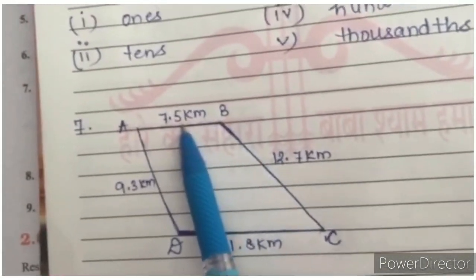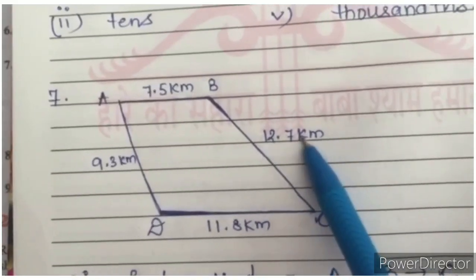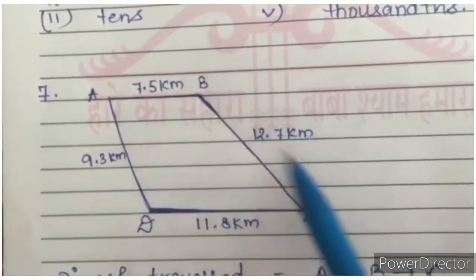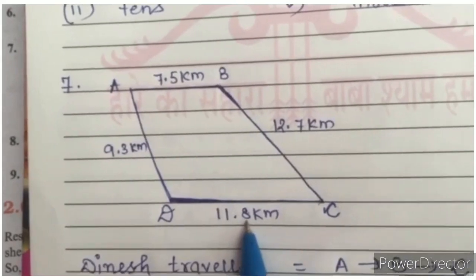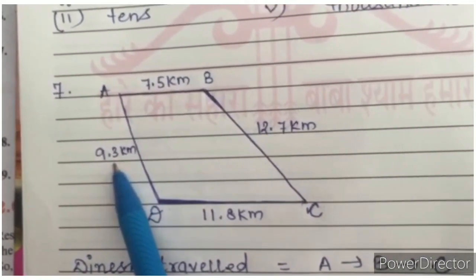From A to B, it is given in the question that is 7.5 km away. B to C, it is 12.7 km away. D and C, it is 11.8 km. And A and D, the distance between A and D is 9.3 km.